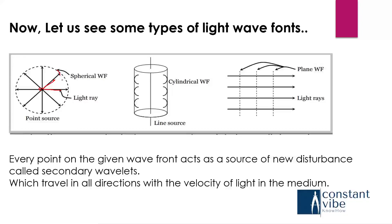If the source is a spot source and the light source is a line, the cylindrical wavefront will be developing. The point of source here is a single point, so a spherical wavefront is developing. And here, a cylindrical wavefront is developing because the source of light is a line.